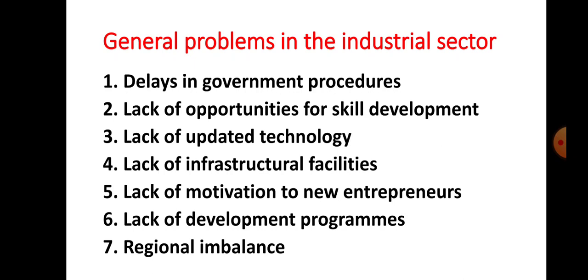Another problem is lack of infrastructural facilities. Infrastructure means basic facilities provided by the public and private sector for social welfare. Economic infrastructure includes sources of energy, modes of transport (railways, roadways, waterways, airways), and all types of communication. Social infrastructure includes health and education. In India, the railways and roadways network is too limited, making transportation of goods and services difficult. Additionally, electricity costs are very high, which affects industrial production.